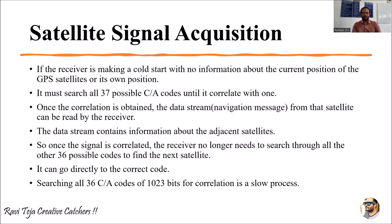Once the correlation is obtained, the data stream — which we can call the navigation message from the satellite — can be read by the receiver. This navigation message contains information about the adjacent satellites near the one we have correlated with.